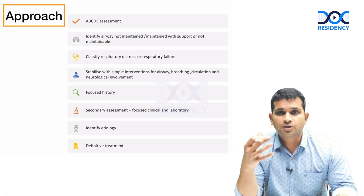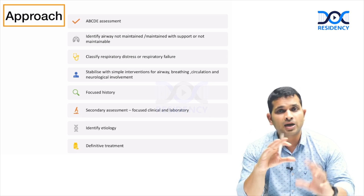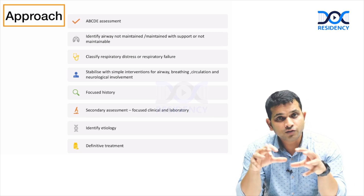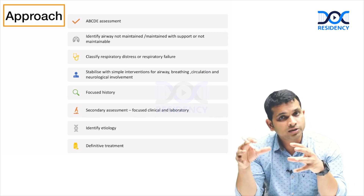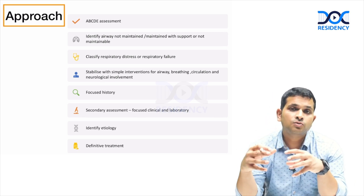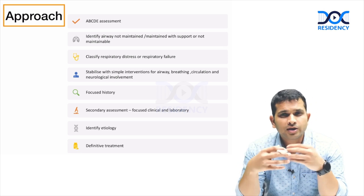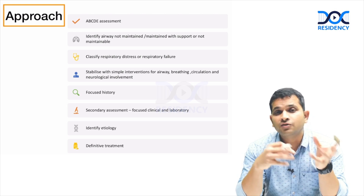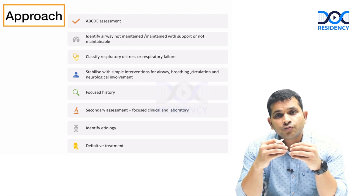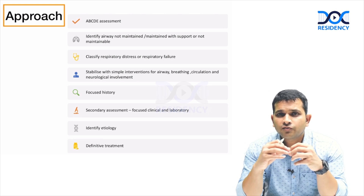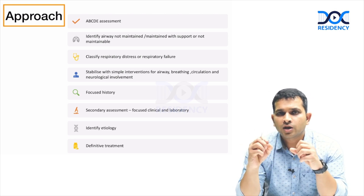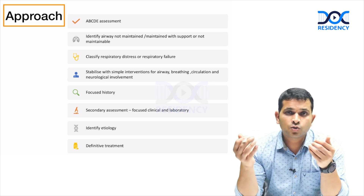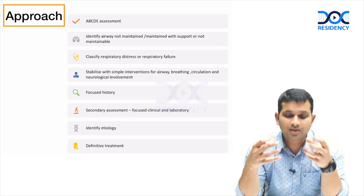Then we do a focused assessment. After primary assessment and initial stabilization, we go to identification — mild, moderate, or severe work of breathing. We do targeted intervention, then take a detailed secondary history, go in depth of each symptom, and identify whether the illness is infectious or non-infectious. Once we reach a conclusion — bronchiolitis, pneumonia — we justify it with laboratory investigations: X-ray, blood tests — which help confirm our diagnosis.